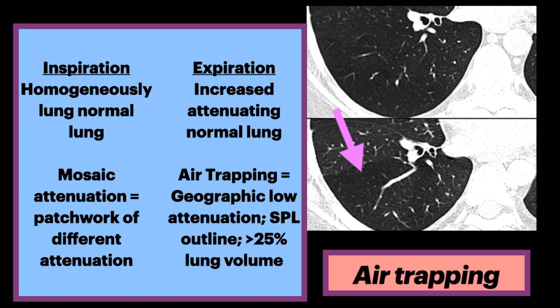On inspiration, the normal lung is homogeneously lucent. Mosaic attenuation is abnormal and defined as a patchwork of regions of different attenuation. On expiratory view, normal lung should demonstrate increased attenuation. The pathology of air trapping is sharply defined geographic foci of lower attenuation, which follows the outline of the secondary pulmonary lobule and affects more than 25% of lung volume.